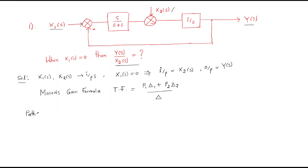Looking at the forward paths from x2 to y(s), we have only one forward path. Forward path 1: P1 = 1/s. There is no forward path 2. For Δ1, since there is no loop touching this path, Δ1 = 1 minus 0, so Δ1 = 1.